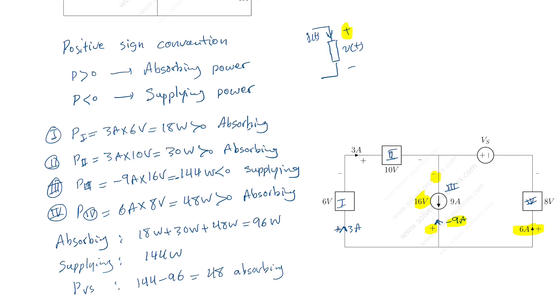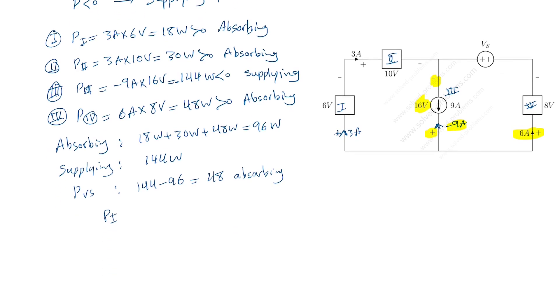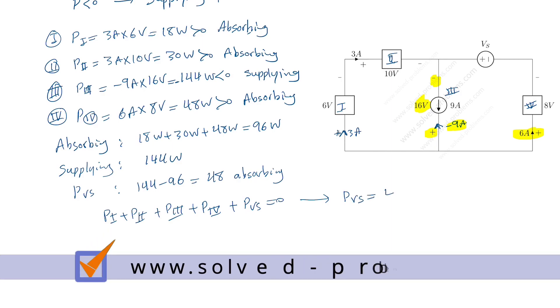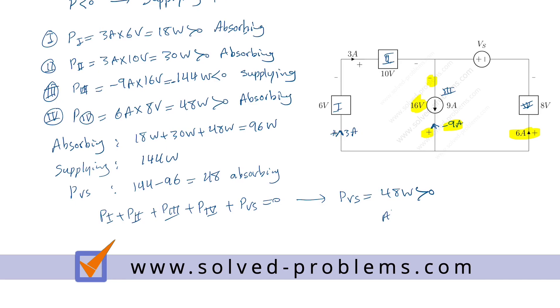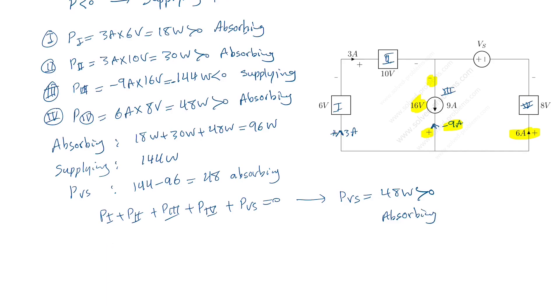Because we have 48 watt extra supplied that is not absorbed. So that power should be absorbed actually by PVs or you can write that P1 plus P2 plus P3 plus P4 plus PVs equals 0. From there you can find PVs equals 48 watt positive and that means that this is absorbing. So now we can say that the problem is solved.